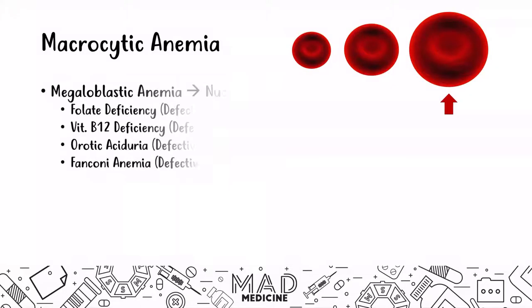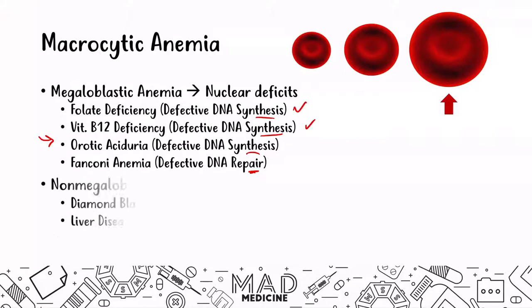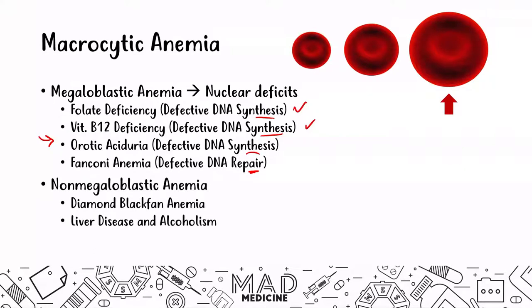Megaloblastic anemias involve issues in DNA synthesis, like the ones we've been discussing and what we're covering today — orotic aciduria. Or you can have an issue with DNA repair, which occurs in Fanconi anemia. We've already talked about folate and vitamin B12 deficiencies in a previous video, so go check those out. You can also have macrocytic anemia caused by non-megaloblastic causes like Diamond-Blackfan anemia, and liver disease and alcoholism, which we've already covered.